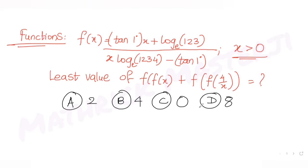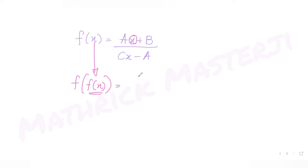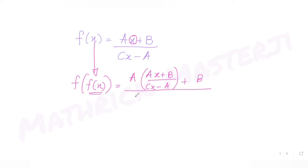Now let's find f(f(x)). Wherever x is present in f(x), I substitute the entire function f(x) in its place. So I get a·[(ax+b)/(cx−a)] + b, all divided by c·[(ax+b)/(cx−a)] minus a.